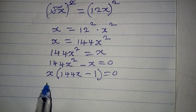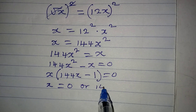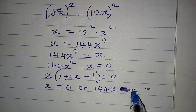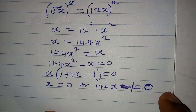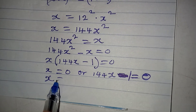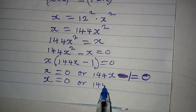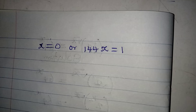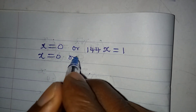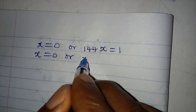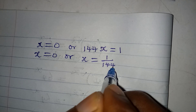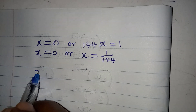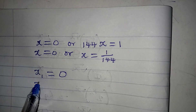Applying the zero product rule, x is either equal to zero, or 144x minus 1 equals zero. From the second factor, 144x equals 1, so x equals 1 over 144. So our two solutions are x₁ equal to zero and x₂ equal to 1 over 144.